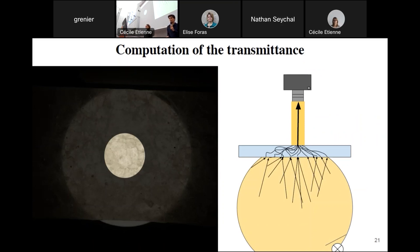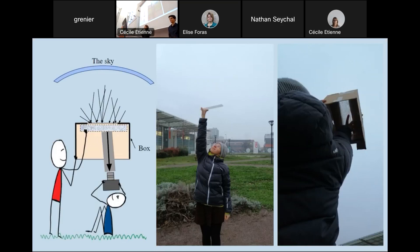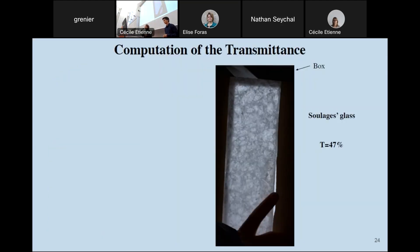But eventually, we found one, the sky. On a day of snowy weather, the sky has a perfect homogeneous brightness. To prevent light entering the sample from the edges and from the bottom, we put it on a box with a hole. We did the measurement and found a transmittance of 47%.